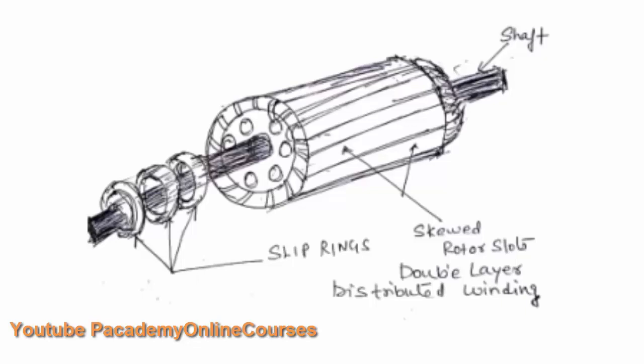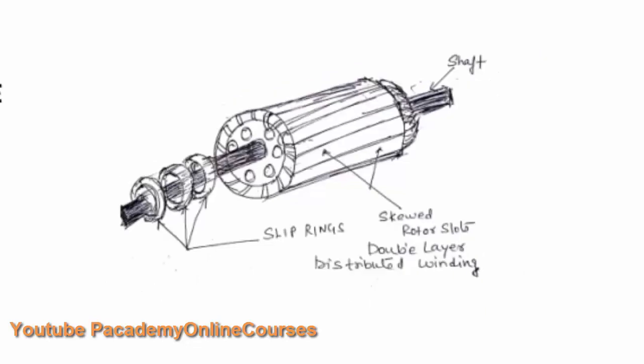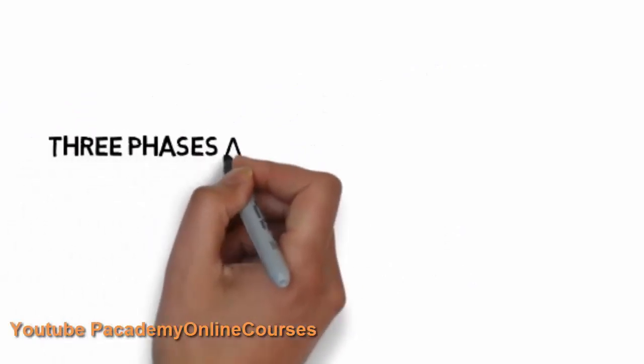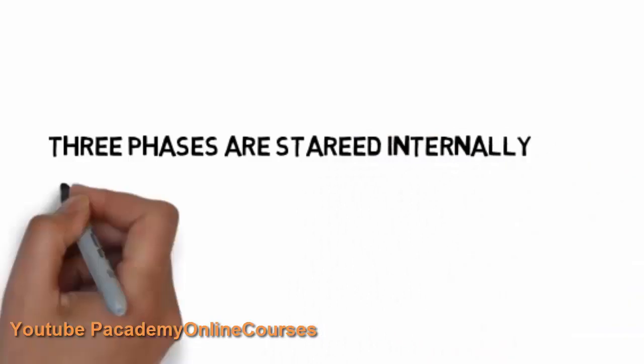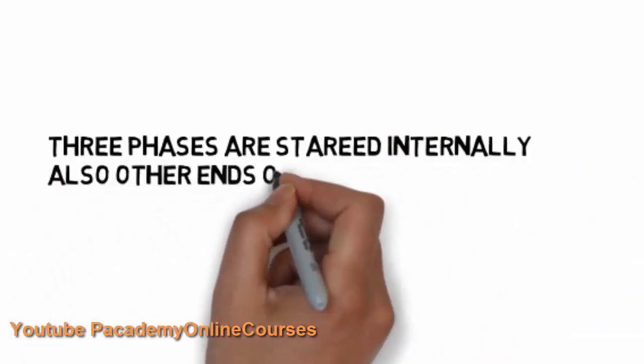This helps to introduce resistance in the rotor circuit. The rotor speed is as in case of squirrel cage induction motor. The winding here is double distributed winding. The three phases are star connected internally.